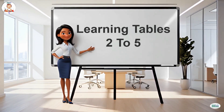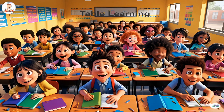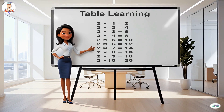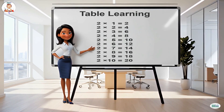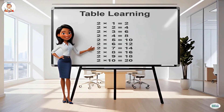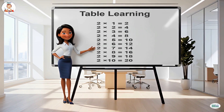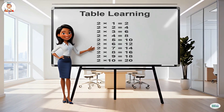Two ones are two, two twos are four, two threes are six, two fours are eight, two fives are ten, two sixes are twelve, two sevens are fourteen, two eights are sixteen.